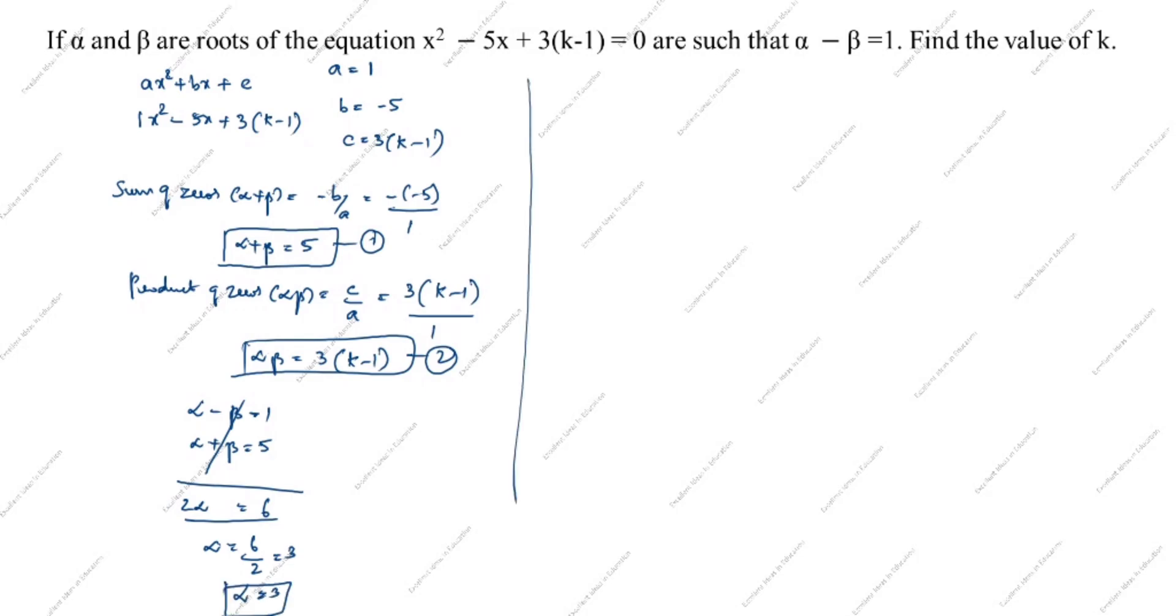Next, in equation 1 substitute alpha equals 3. So equation 1 is alpha plus beta equals 5. Alpha is 3, so beta equals 5 minus 3. Beta equals 2.